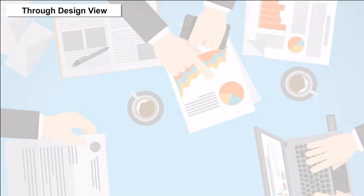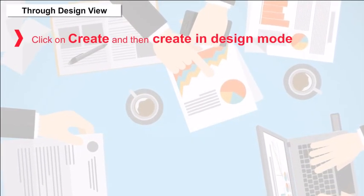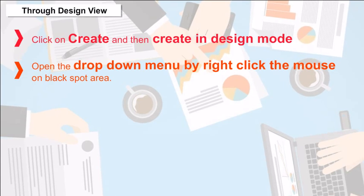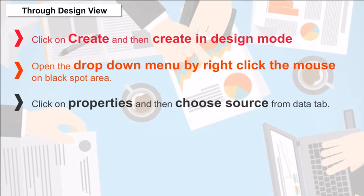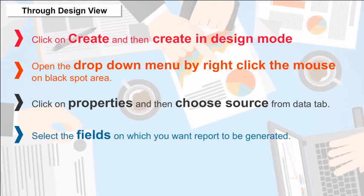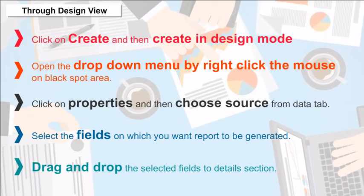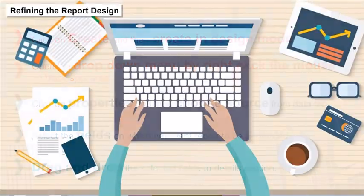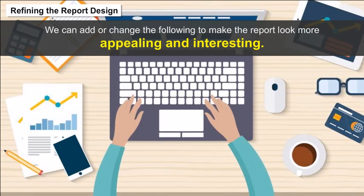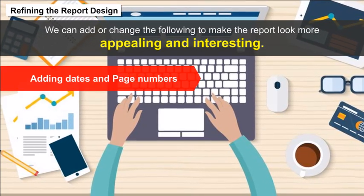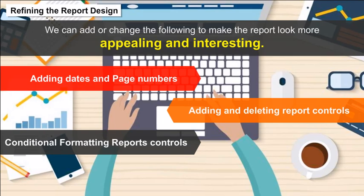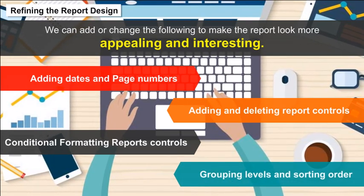Through Design View: Click Create and then Create in Design Mode. Right-click on the blank area, click Properties, choose Source from the Data tab, select the fields to report on, and drag and drop selected fields to the Details section. Refining the report design: We can add or change the following — adding dates and page numbers, adding and deleting report controls, conditional formatting of report controls, and grouping levels and sorting orders.